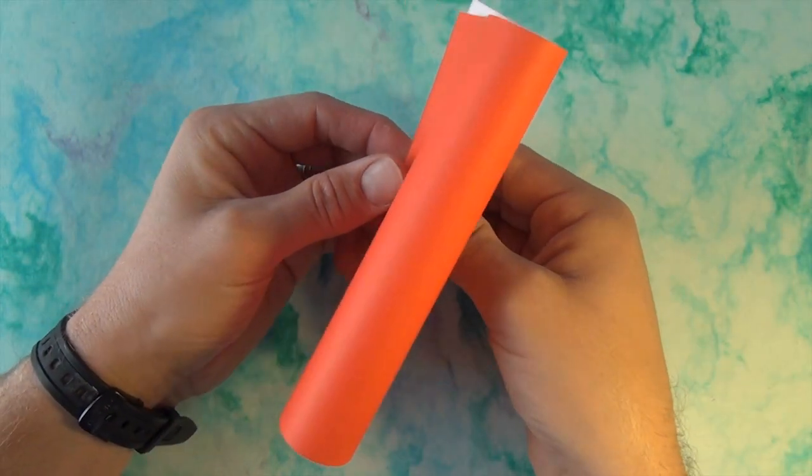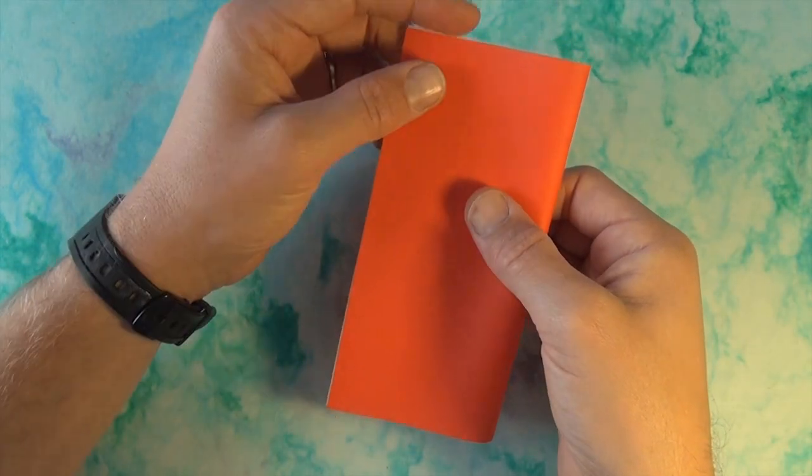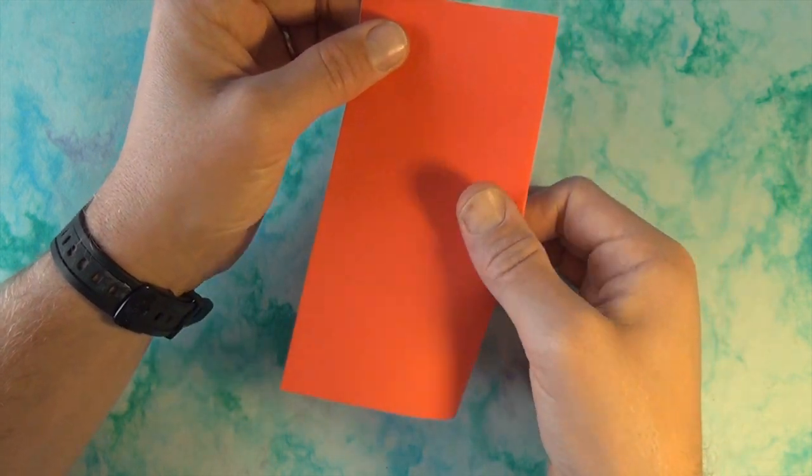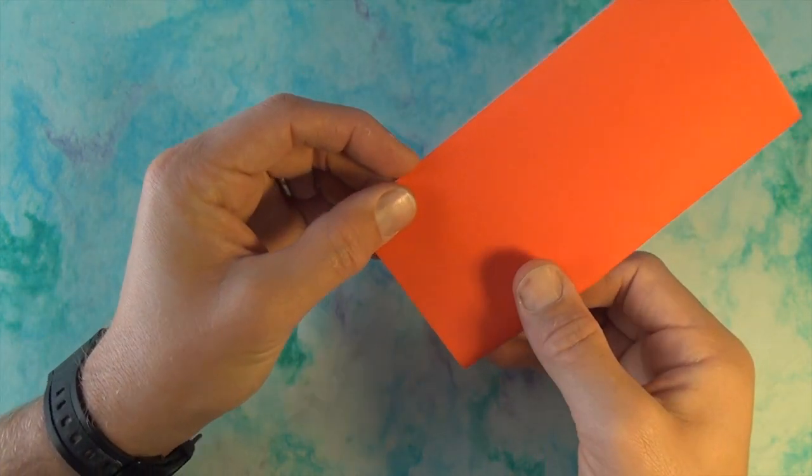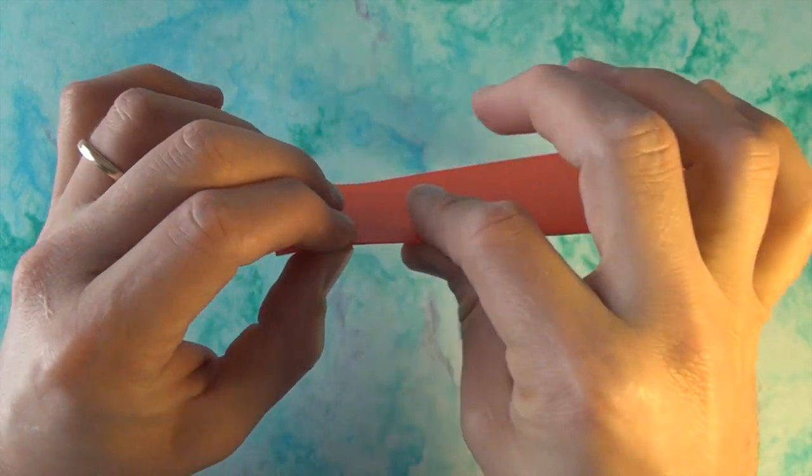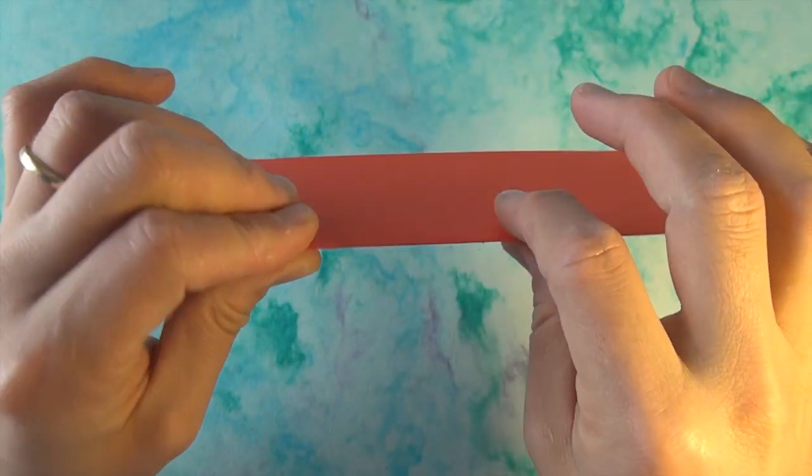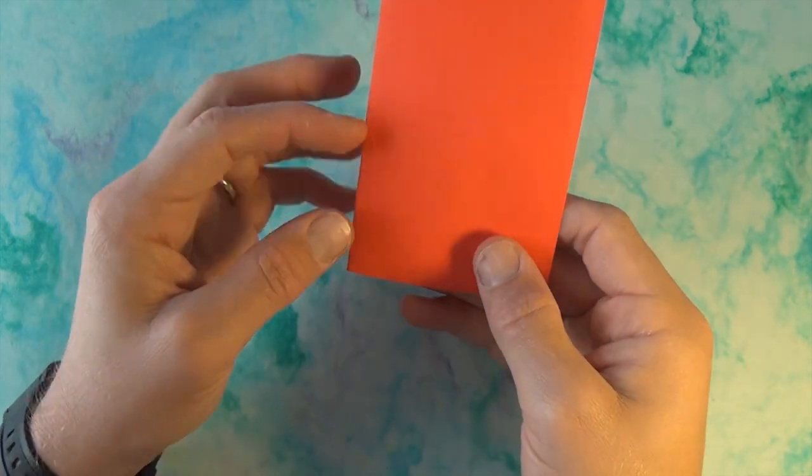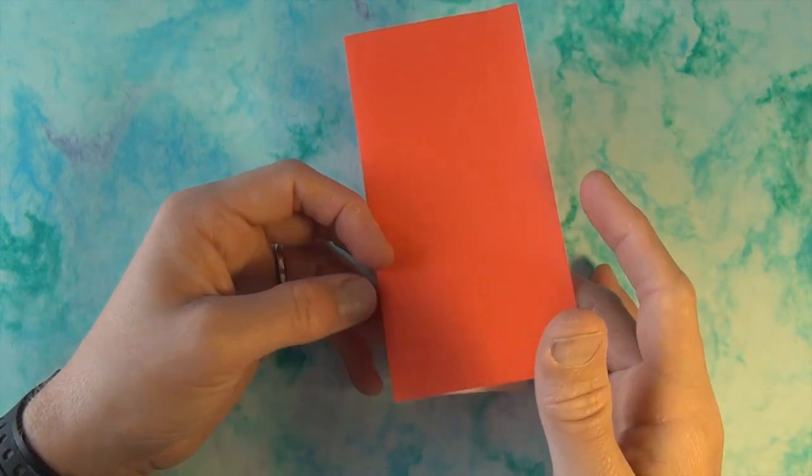Alright, so fold it in half like this. And this should be perfect, but make sure that you don't use your fingernails. Just fold it with your fingers like that. Okay? Now, you want to turn it over, so that it looks like the front of a book.